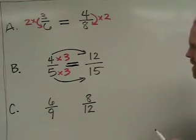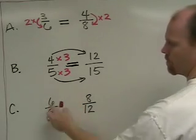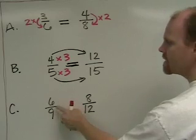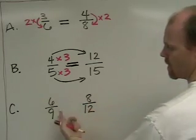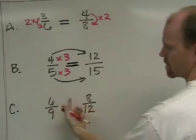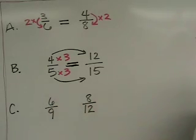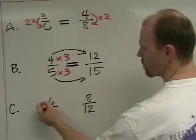And in the last example, C, vertically we don't see a nice easy relationship between the 6 and the 9. Horizontally, we don't see a nice easy relationship between the 6 and the 8. So we're going to look diagonally at the cross products.